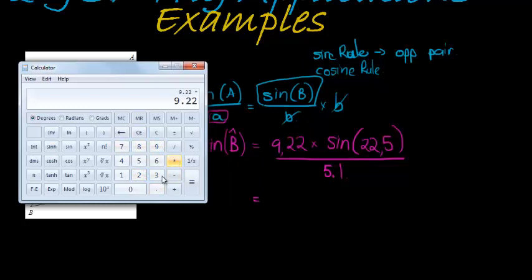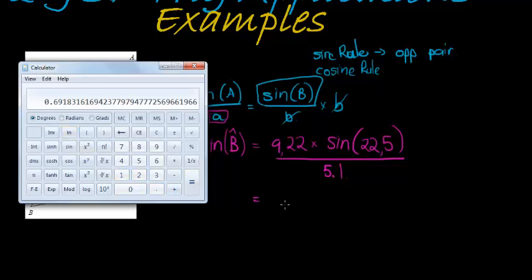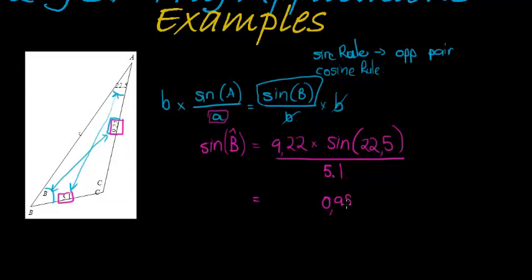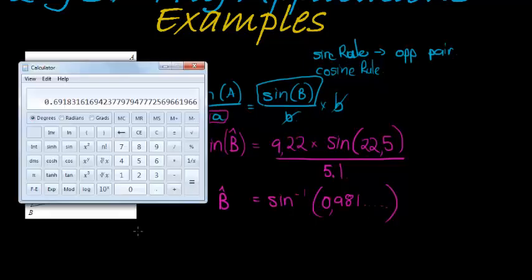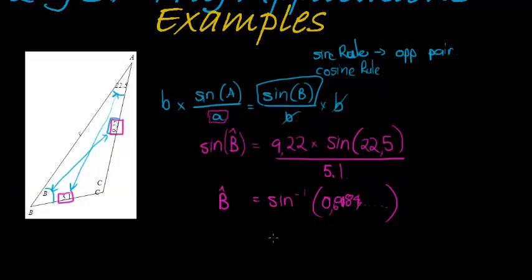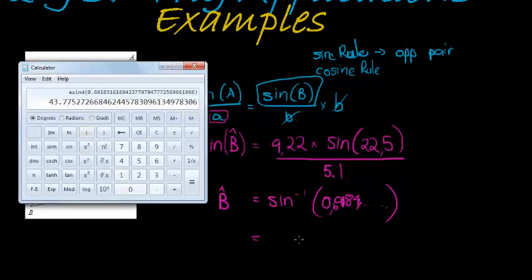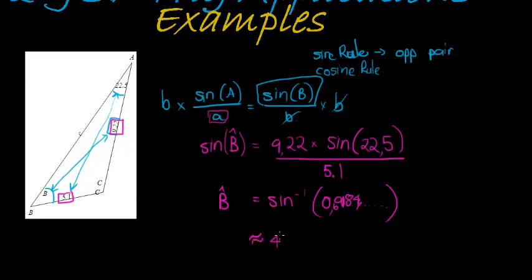Using the calculator: 9.22 times sine of 22.5, divided by 5.1, gives approximately 0.981. Remember, that's sine of B, not the angle B itself. To calculate B we have to use arc sine. Taking arc sine of that value, we get 43.78 degrees — I note there was a small transcription error earlier but the final answer is 43.78 degrees.